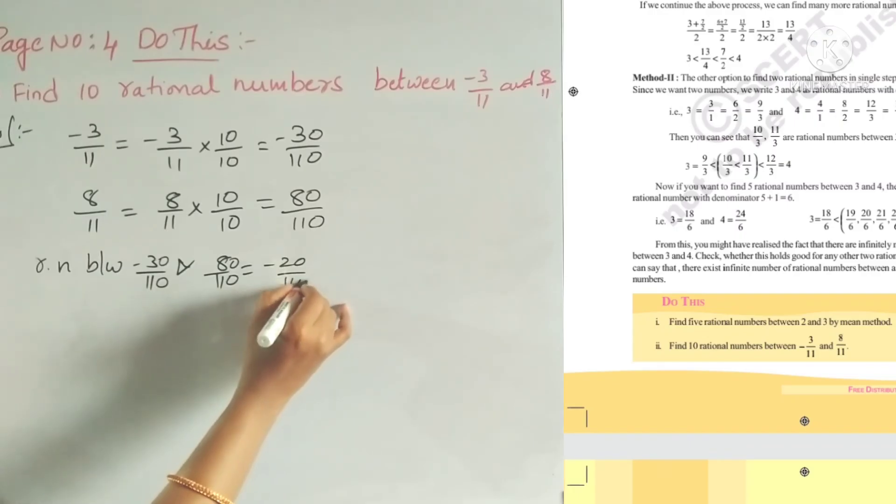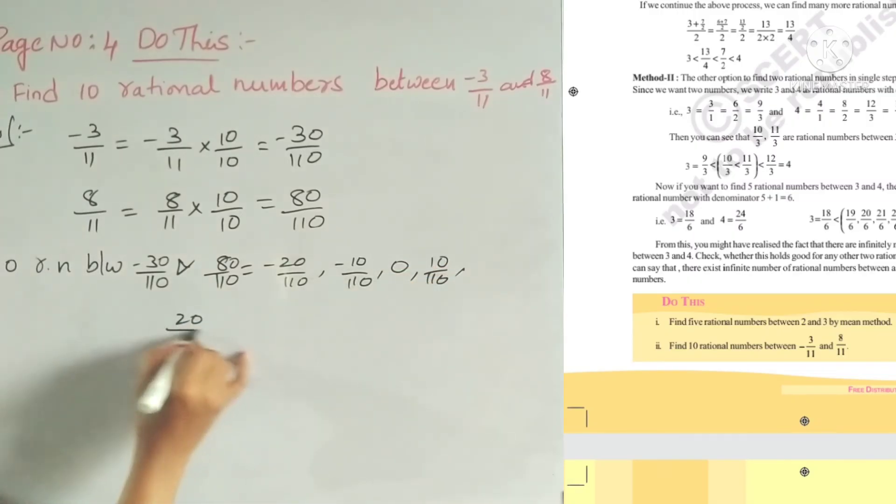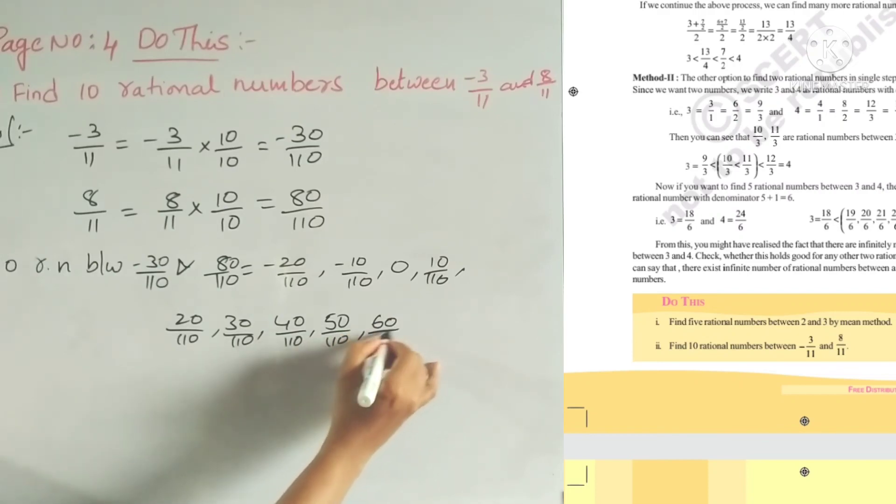The 10 rational numbers are: minus 20 by 110, minus 10 by 110, 0, 10 by 110, 20 by 110, 30 by 110, 40 by 110, 50 by 110, 60 by 110, and 70 by 110. So we've written 10 rational numbers.